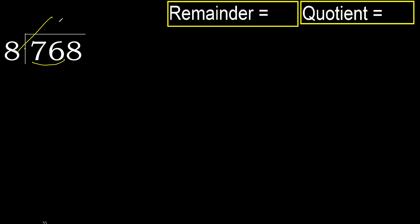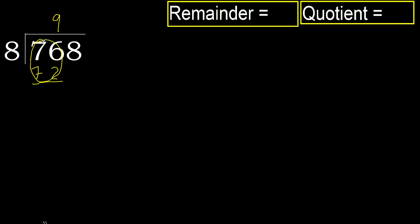8 multiplied by 9 is 72. 72 is not greater, ok. Subtract: 76 minus 72 is 4. Next.